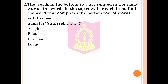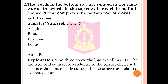Question 2: The words in the bottom row are related in the same way as the top row. Ant / Fly / Bee. Hamster / Squirrel / ___. Option A: Spider, Option B: Mouse, Option C: Rodent, Option D: Cat. The correct answer is Option B, Mouse. Explanation: The three above the line — ant, fly, and bee — are all insects. Hamster and squirrel are rodents, so the correct choice is mouse, which is also a rodent. The other three choices are not rodents.